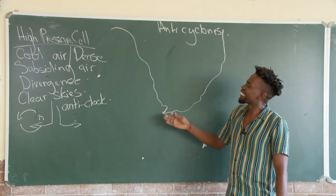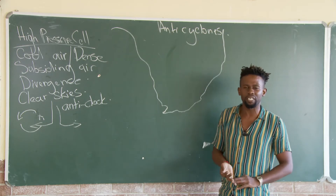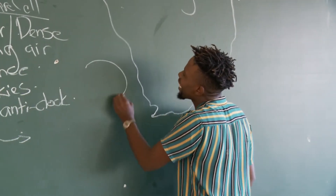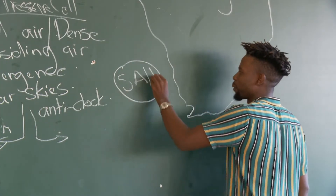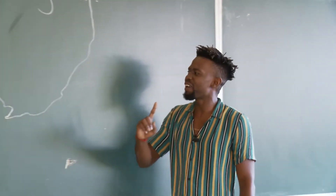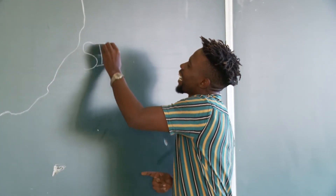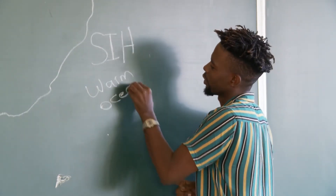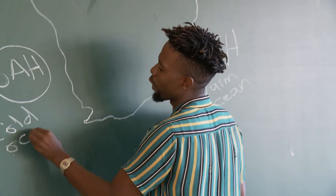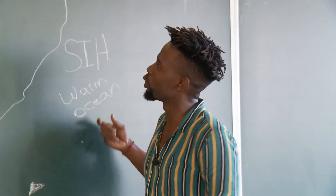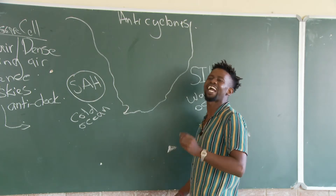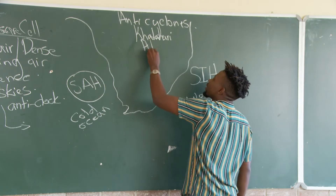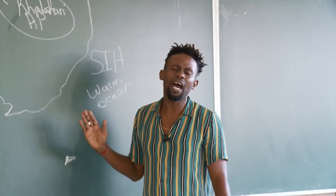Now let us go to the business of the day. How many anti-cyclones do we have? We have three anti-cyclones, and they are located in different locations. On the Atlantic Ocean we have the South Atlantic high-pressure cell. Then we have a second anti-cyclone known as the South Indian High. We know this is a warm ocean and the Atlantic Ocean is an extremely cold ocean. And inside we have what you call the Kalahari high-pressure cell.